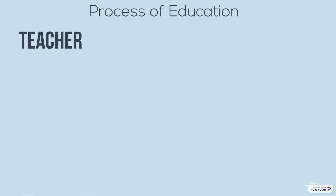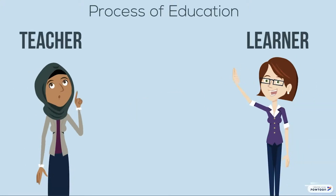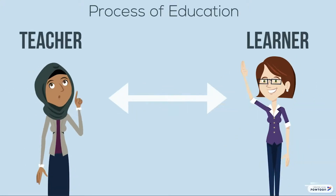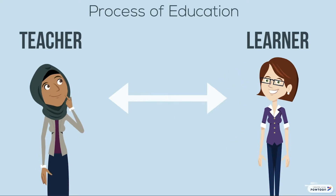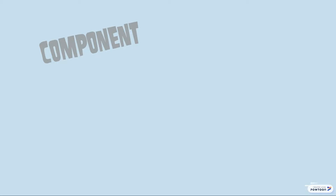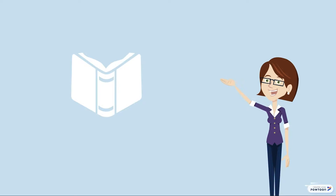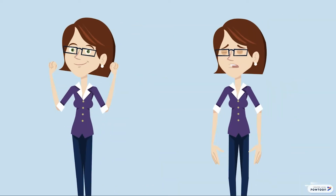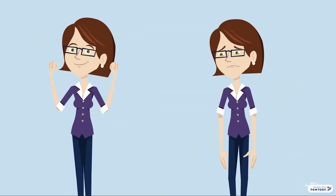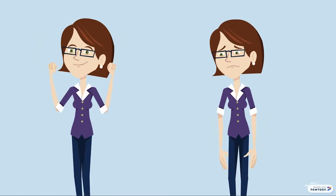The process of education is a complex series of interactions between two key components: the teacher and the learner. It would be easy to think that for education to be effective all that is required is the delivery of teaching that is clear and of a high quality. But teaching is only one component of an educational encounter. If we have not considered how an individual learns best, what motivates them, or even what mood they are in, then we may not be able to provide optimal conditions for learning to take place.